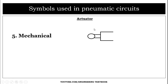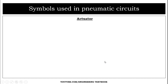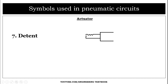The fifth actuator type is mechanically operated. The sixth is spring operated. The seventh is detent. The eighth is solenoid, which is electrically operated.